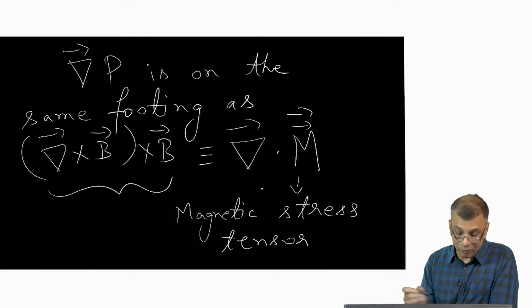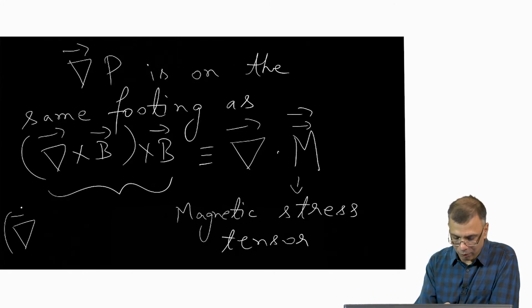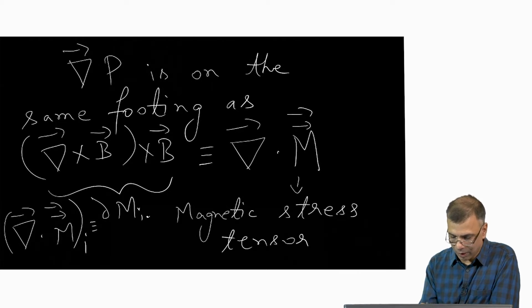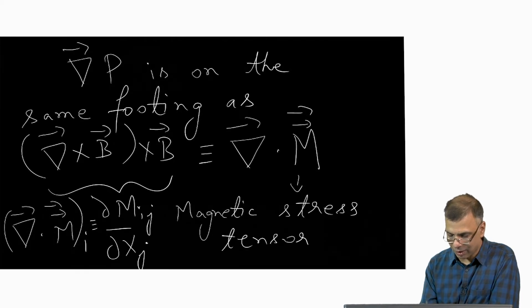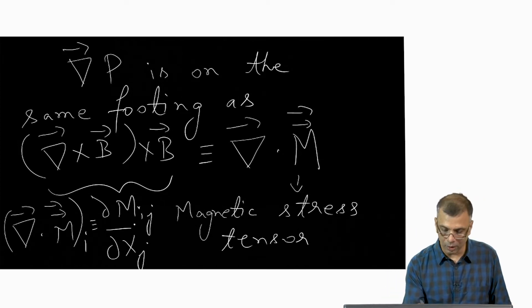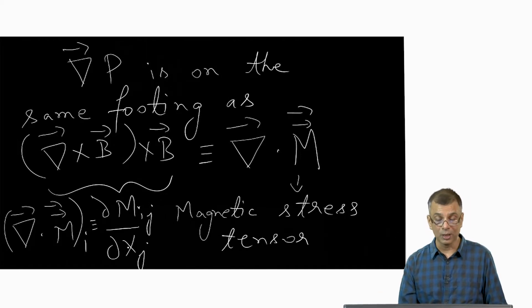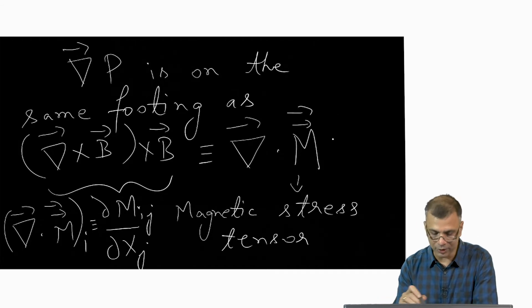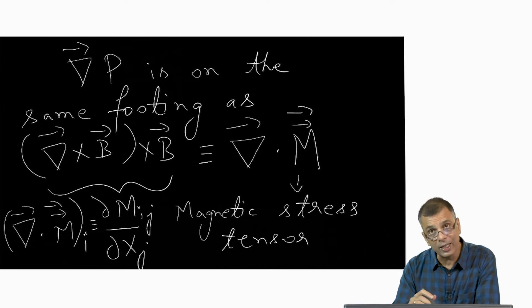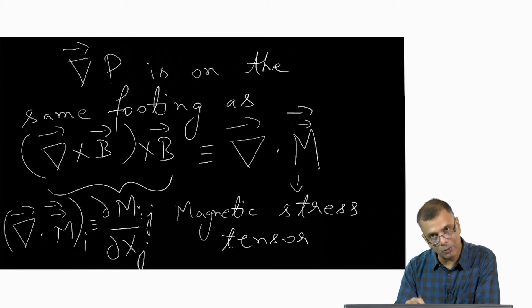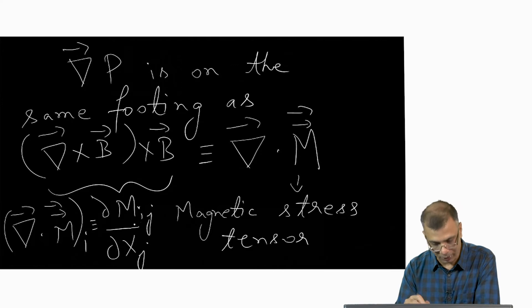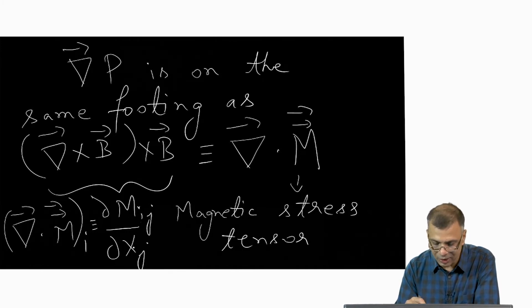The ith component of the divergence of M is dM_ij/dx_j, where the repeated index j implies summation. For example, the x-component would be dM_xx/dx plus dM_xy/dy plus dM_xz/dz.